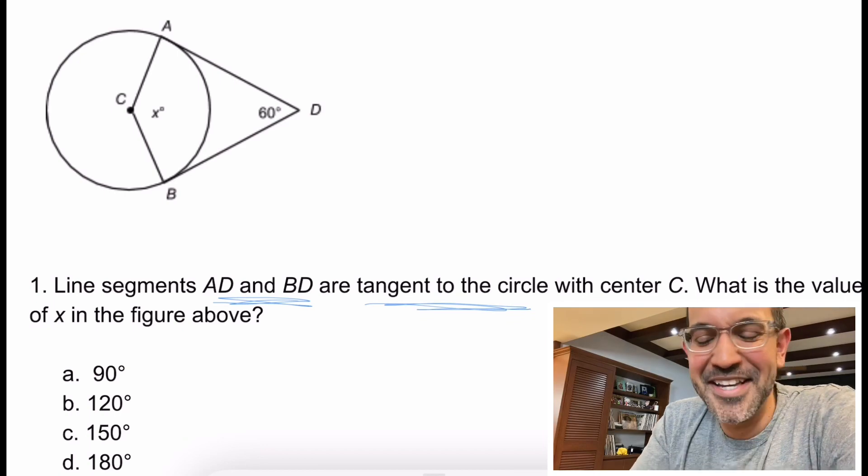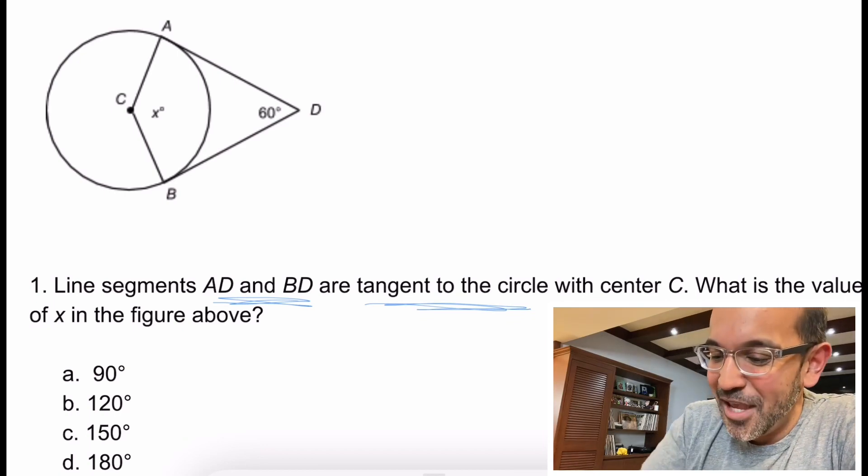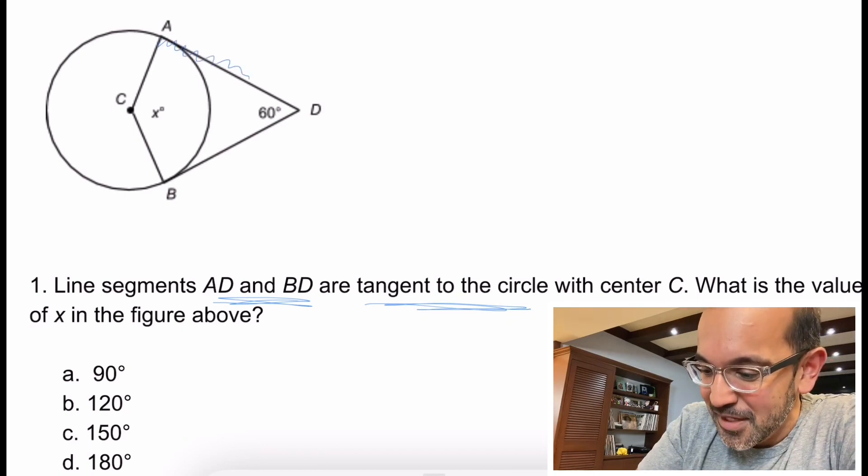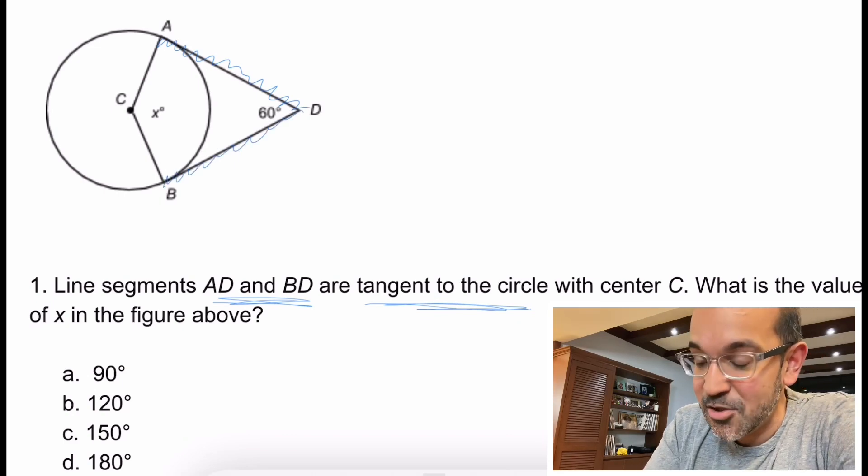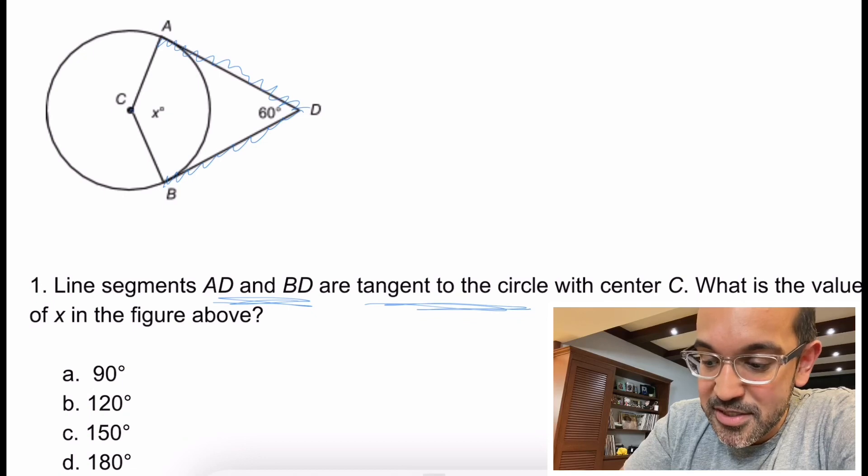It doesn't need to be confusing. So we have AD and we have BD and both of these are tangent to the circle, right, with center C. So this is the circle. So here's the deal.